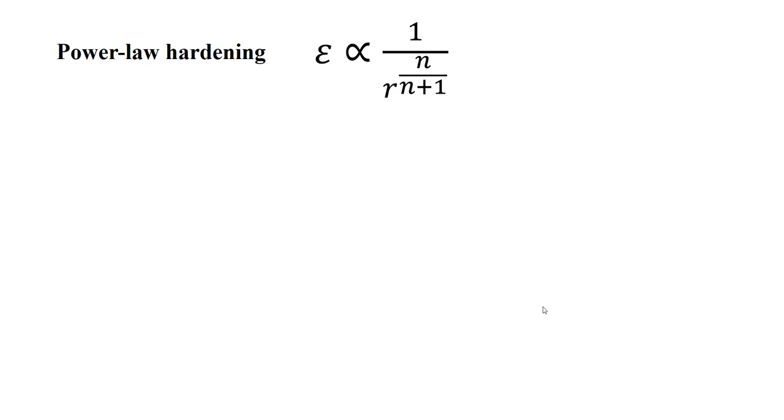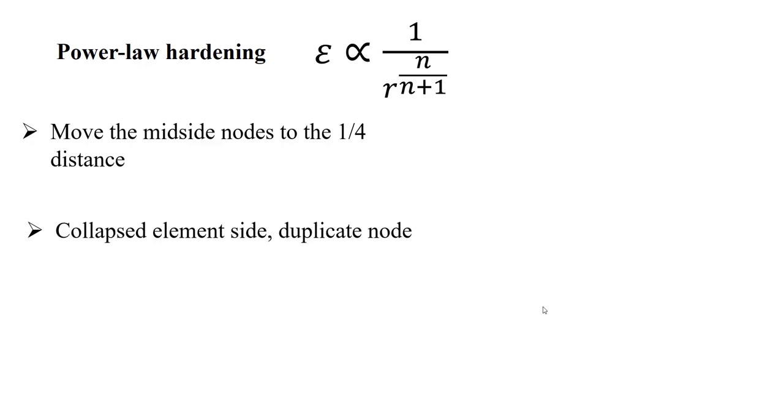And finally, for power-law hardening, we can move the mid-side nodes to the one-fourth distance, and also we should collapse element side to duplicate node.